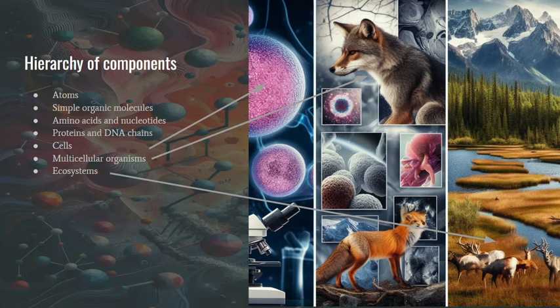He's saying it applies to all things which are made out of a hierarchy of components. Atoms are the base level. These then make simple organic molecules. These then make amino acids and nucleotides. These then make proteins and DNA chains, which compose cells. Cells then make multicellular organisms, and multicellular organisms make up ecosystems.